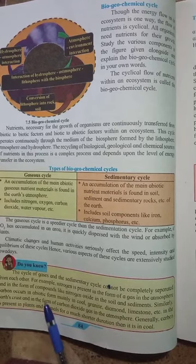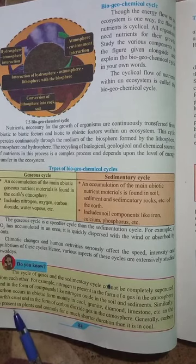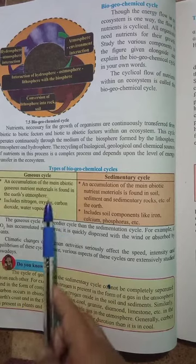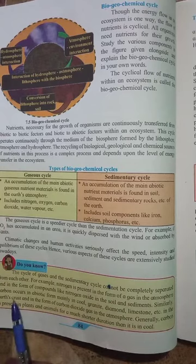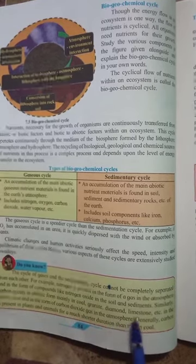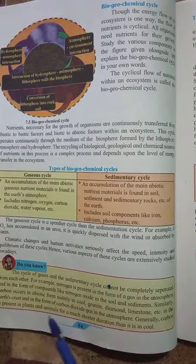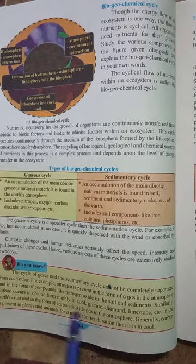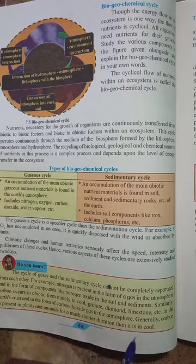Similarly, carbon occurs in an abiotic form — mainly coal, granite, diamond, limestone, etc. Carbon dioxide is included in the gaseous cycle, but when talking about carbon alone, it mainly occurs from coal, granite, diamond, and limestone, which are included in the sedimentary cycle. In the earth's crust, chemical processes occur and carbon dioxide is formed and present in the atmosphere. Generally, carbon is present in plants and animals for a much shorter duration than it is in coal. Thank you.